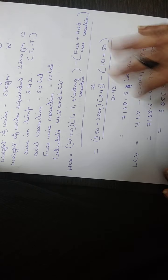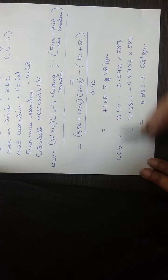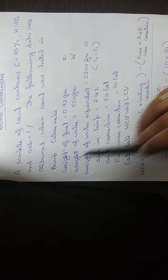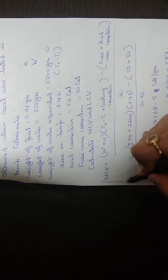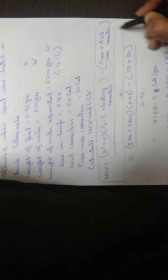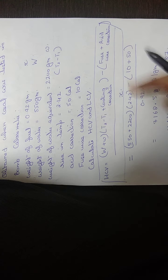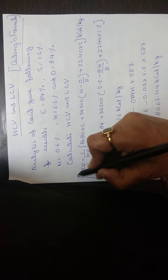These are the two methods to calculate high calorific value and low calorific value: one is Dulong's formula and the other is the bomb calorimeter. In both methods, the equation for LCV is the same; only the HCV equation changes. If bomb calorimeter data is given, use the bomb calorimeter formula. If percentages of carbon, hydrogen, oxygen, and sulfur are given, use Dulong's formula.